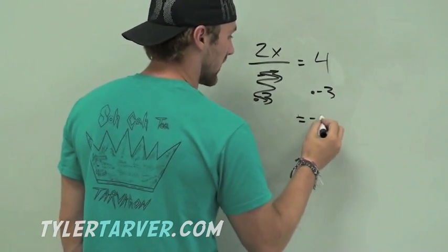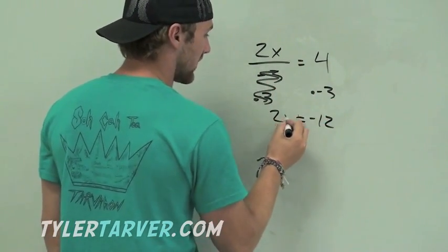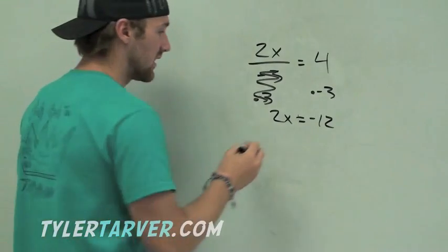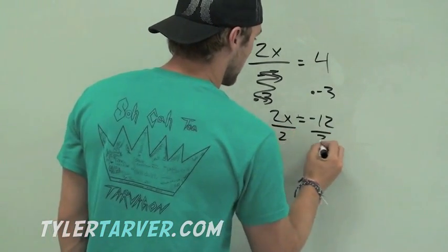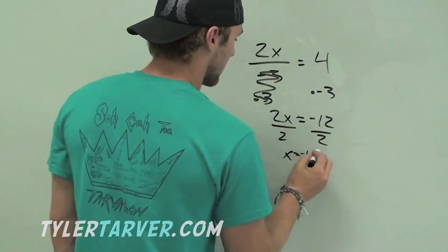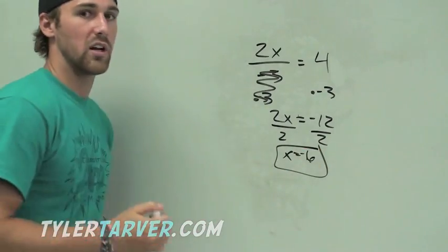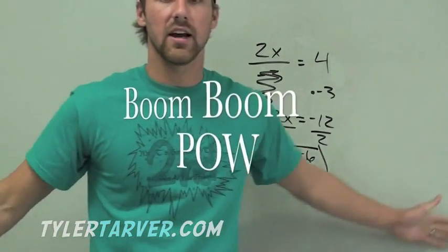4 times negative 3 is negative 12. Bring down to 2x. Get x by itself. Divide by 2. x equals negative 6. Want to check it? We'll plug it in. That's the end. Have a good day.